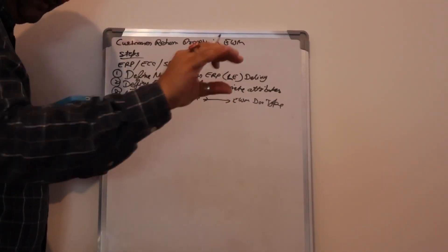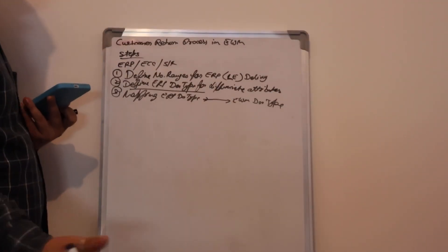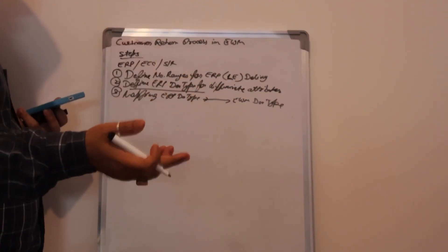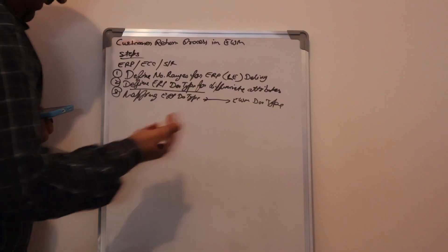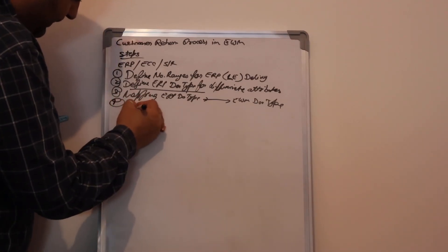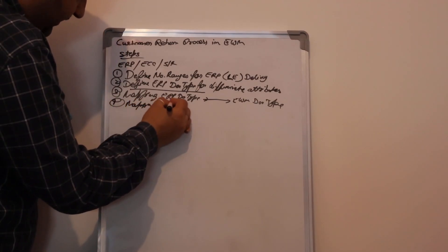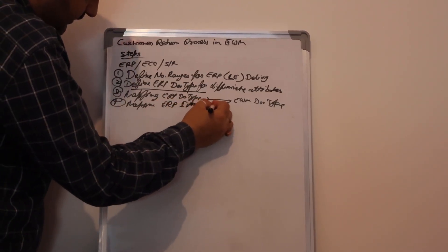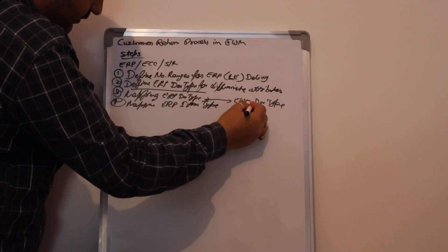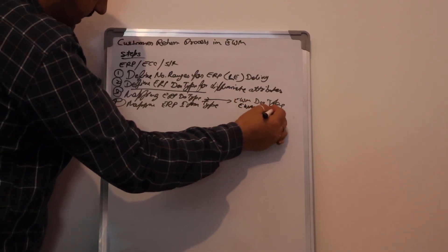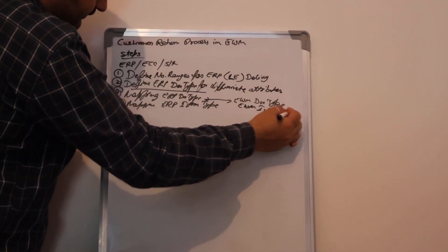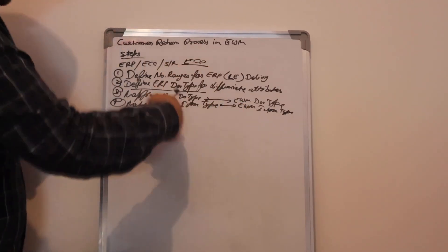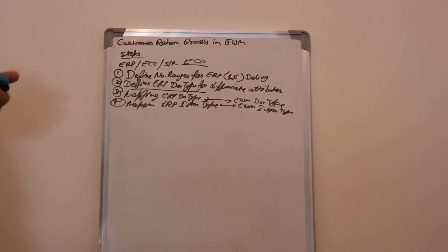If you have a header document type, we must also have the item type. For example, if you have the material master MARA, then you have the MARC table — similar. Fourth step: mapping ERP item type to EWM item type. These are the ECC side, ERP side communication configurations we need to perform.